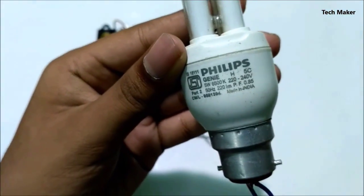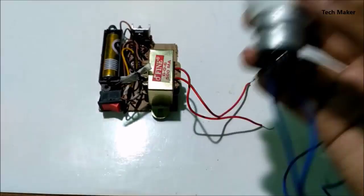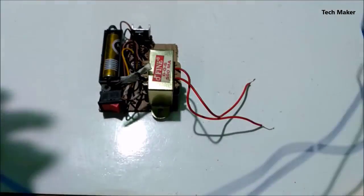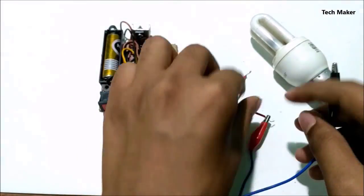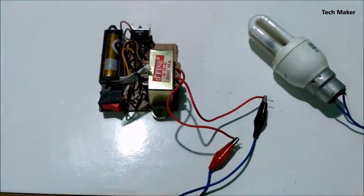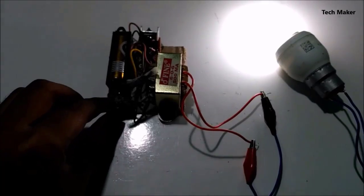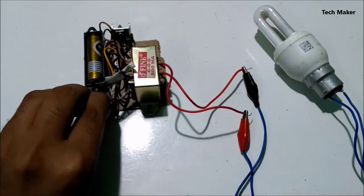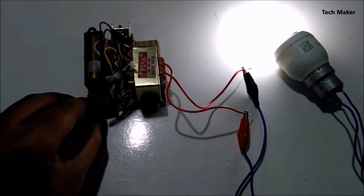Now we will test it. This is the CFL 220 volts bulb. Here I connected it to the crocodile clips. When I turned it on, it glows. That's all guys, don't forget to like, share and subscribe. We'll meet again in next video.